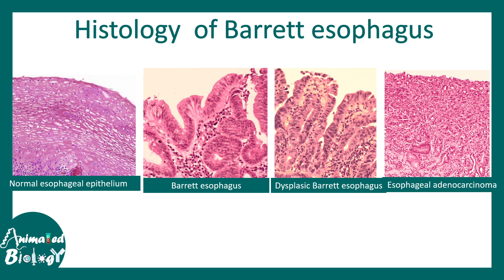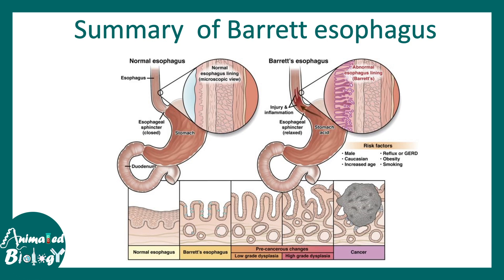So, to summarize what we learned about Barrett's esophagus: the squamous epithelium of the esophagus gets converted into columnar epithelium. We reviewed the risk factors and looked at several stages of progression. The worst case outcome is cancer, but it can also be reversed with proper treatment.